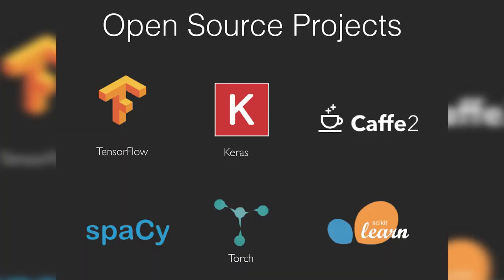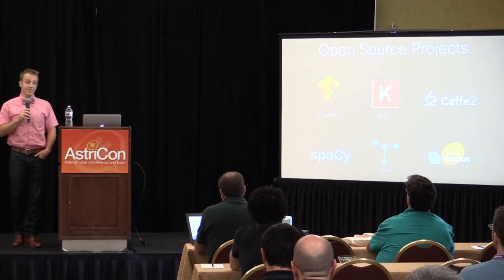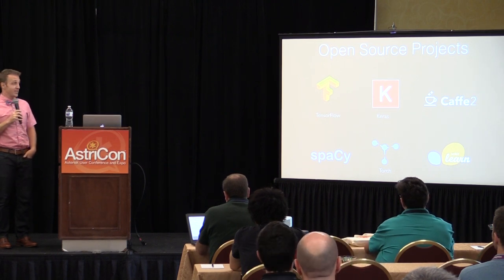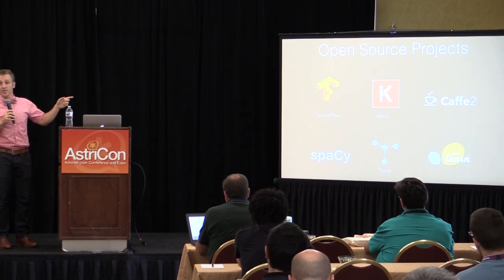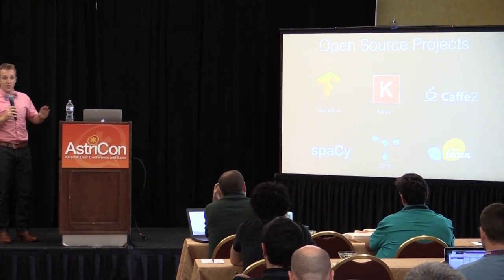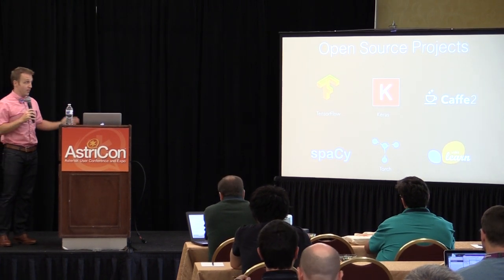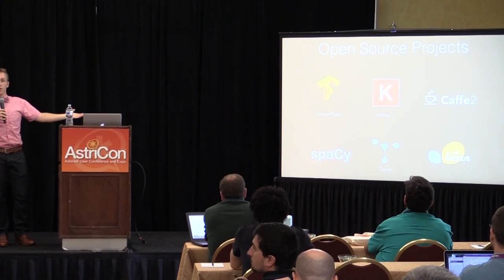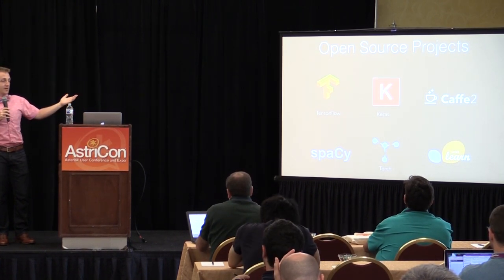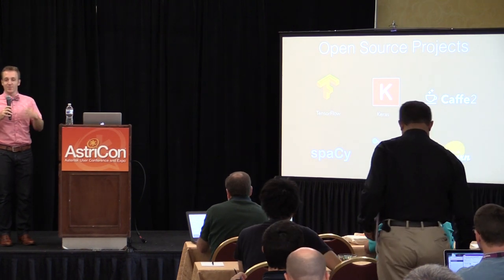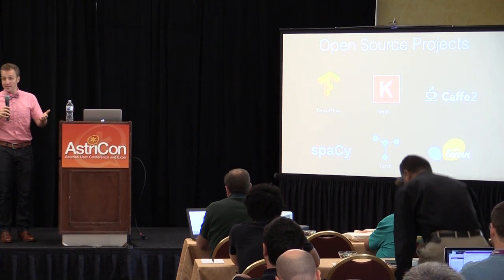Here are some major open source projects you might have heard about. TensorFlow is the big one released by Google — primarily a neural network-based training system used for a lot of their ranking. Keras is a Python API that links a bunch of these together including TensorFlow. Theano is being discontinued — the contributors decided that TensorFlow is the way forward. Caffe2 is from the same guys who made Caffe, a machine learning-based video and picture library for image and video analysis, now at Facebook.